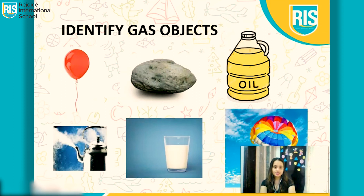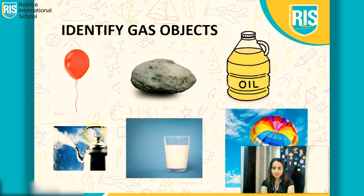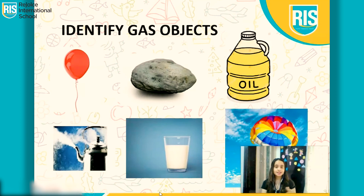Now let's identify the gas objects. Milk — no. Oil — no. Balloon — yes, you are right. And I can see over here the smoke is coming out. You are correct. And parachute. So these are the gas objects. Inside there is a lot of air which we cannot see and we cannot feel it.